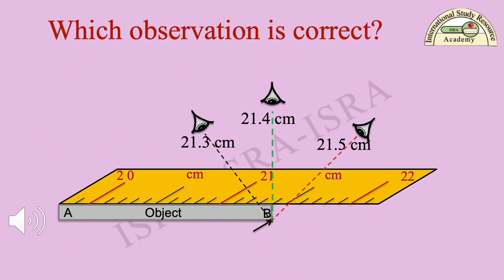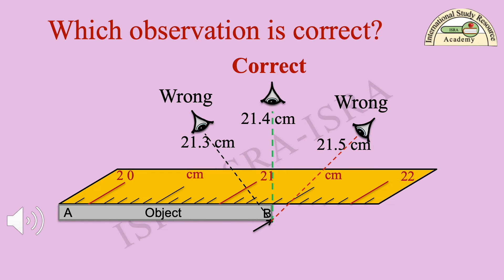Which observation is correct? Think about it. You have learned how to overcome parallax error from the previous slide. Therefore, position your eye level perpendicular to the position point of the object, and perpendicular to the scale graduation of the meter rule. In this diagram, it is represented by the green dotted line. The observed accurate reading is equal to 21.4 cm — it has no parallax error. The other two readings are wrong because of angular vision, and they have parallax error.